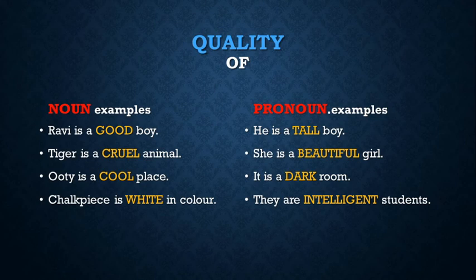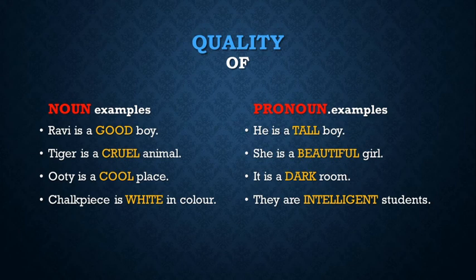Here I have given some examples. Ravi is a good boy. Tiger is a cruel animal. Ooty is a cool place. Chalk is white in color. So here good, cruel, cool, and white — all these are adjectives because they show the quality of nouns.